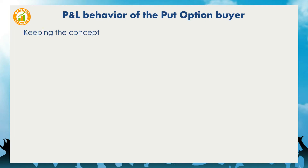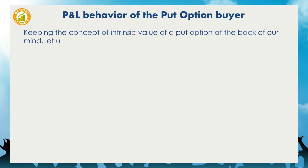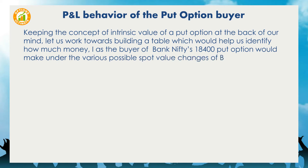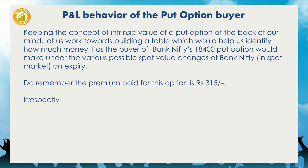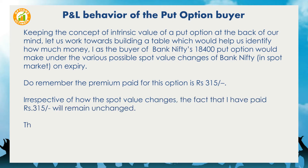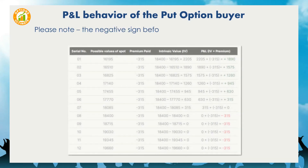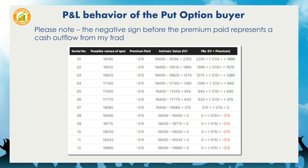Keeping the concept of intrinsic value of a put option in mind, let us build a table to identify how much money I, as the buyer of Bank Nifty's 18,400 put option, would make under various possible spot value changes of Bank Nifty on expiry. The premium paid for this option is ₹315. Irrespective of how the spot value changes, the fact that I have paid ₹315 will remain unchanged — this is the cost incurred to buy the Bank Nifty 18,400 put option. Note that the negative sign before the premium paid represents a cash outflow from my trading account.